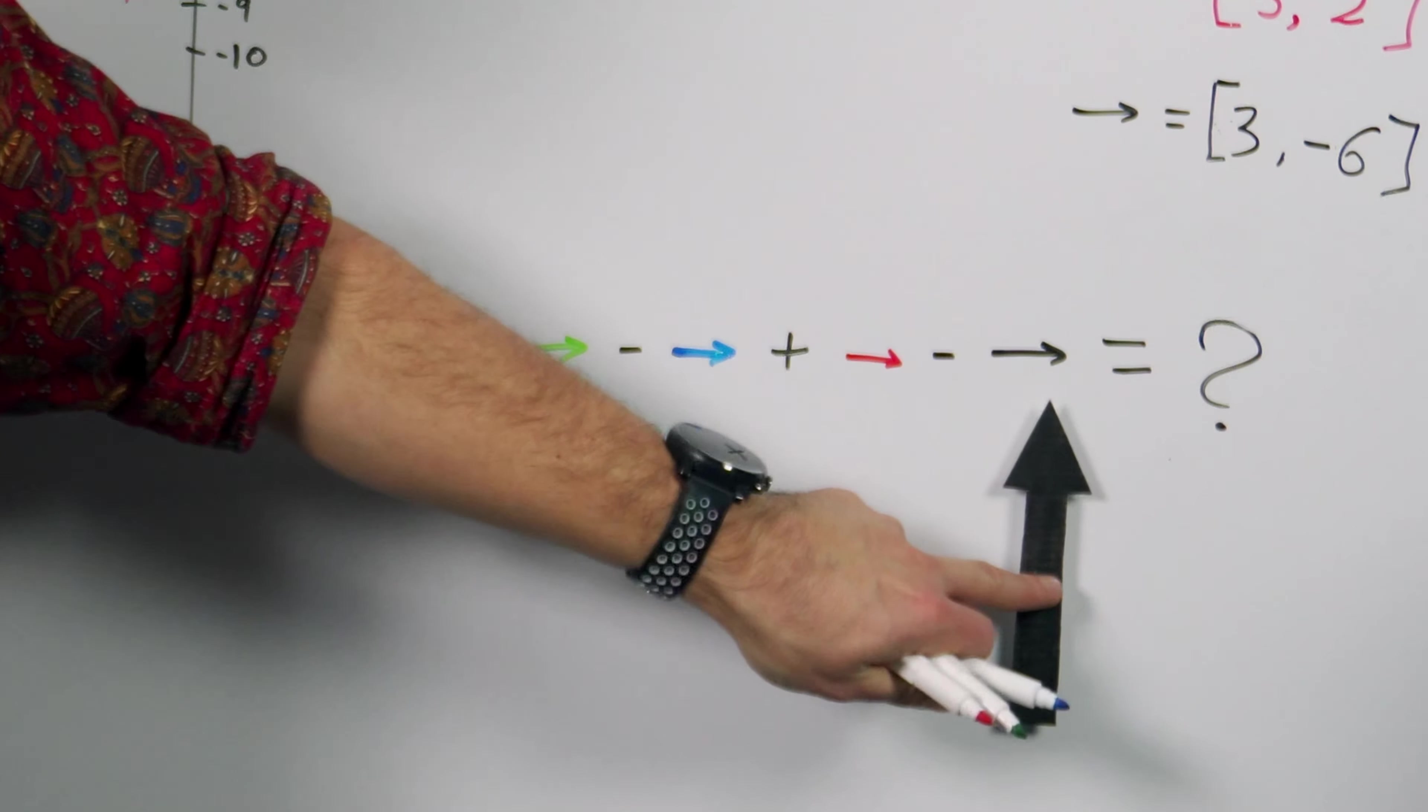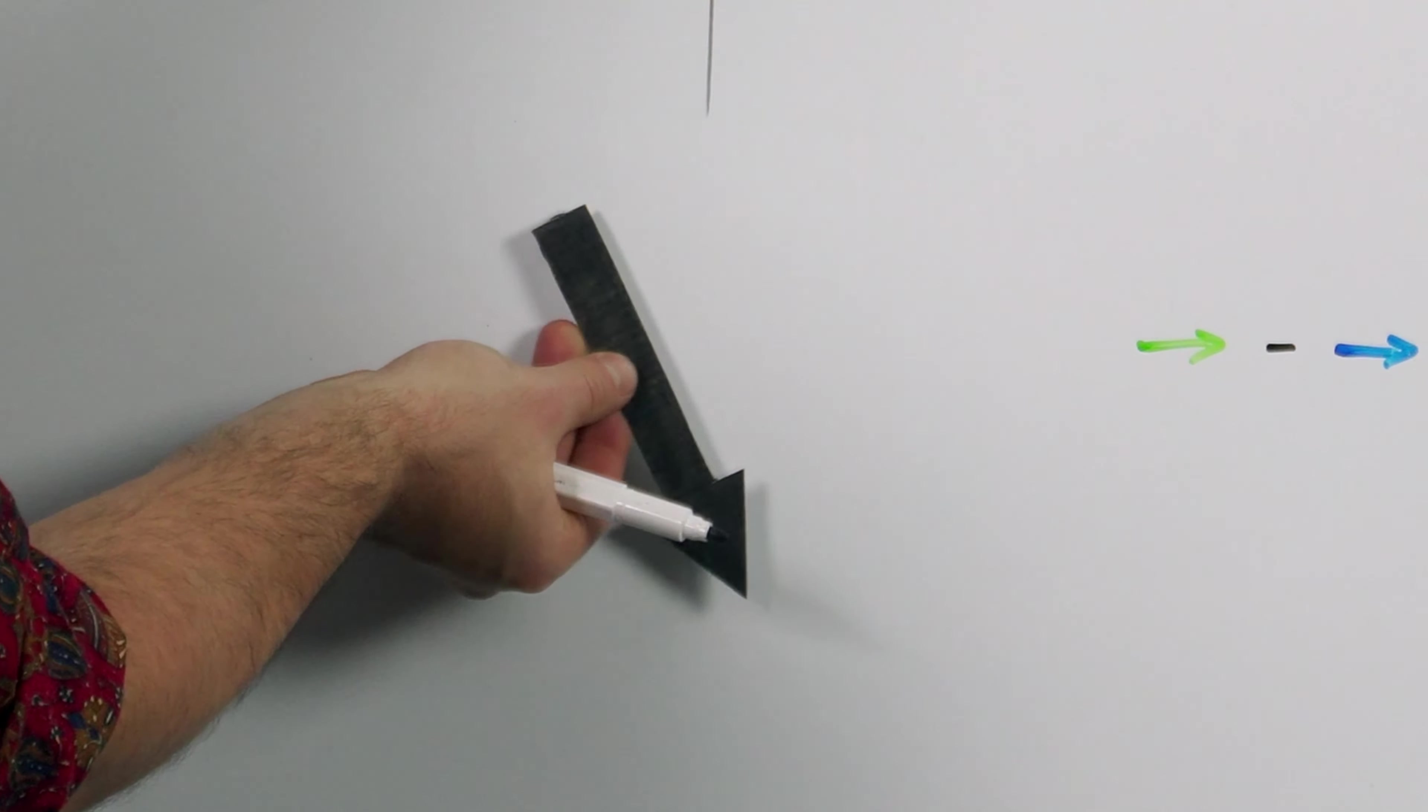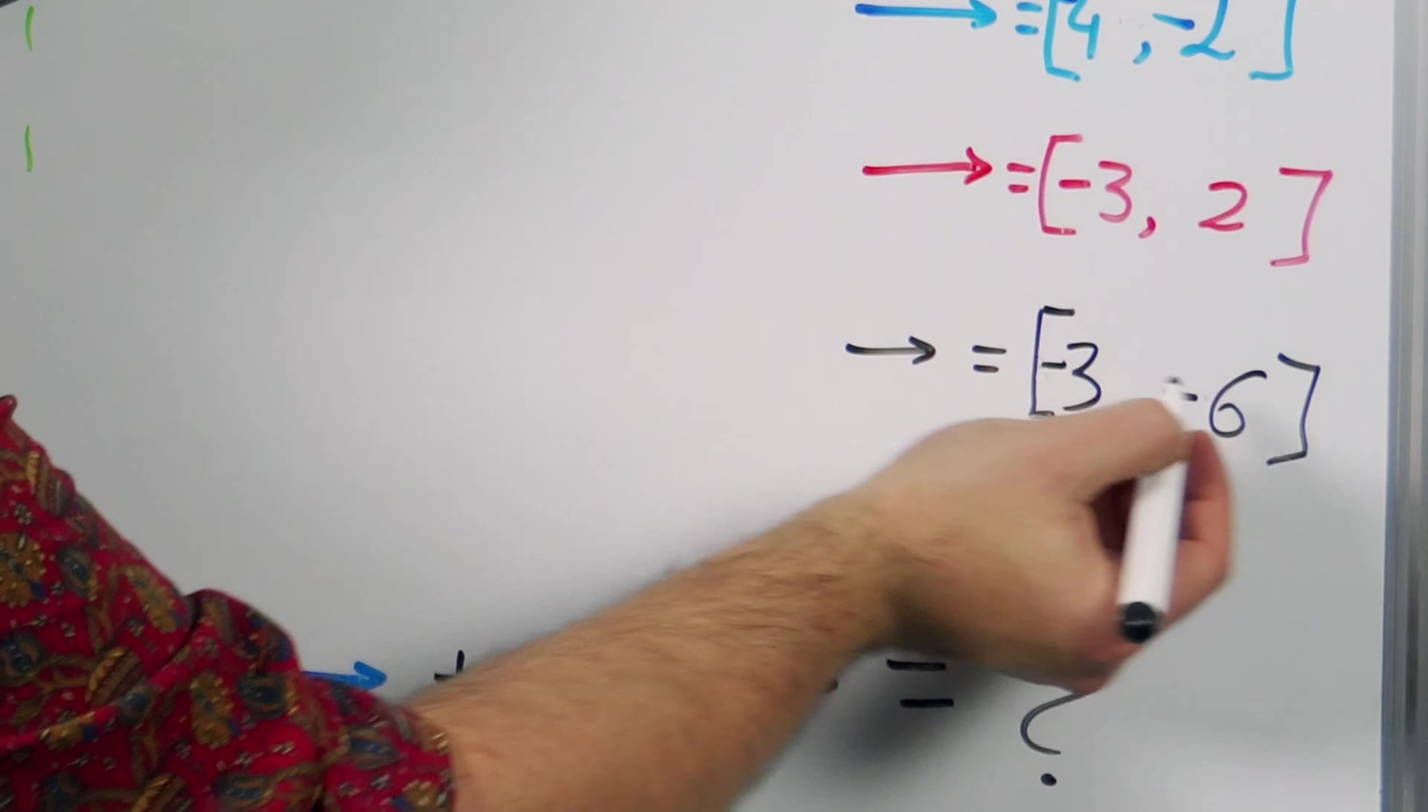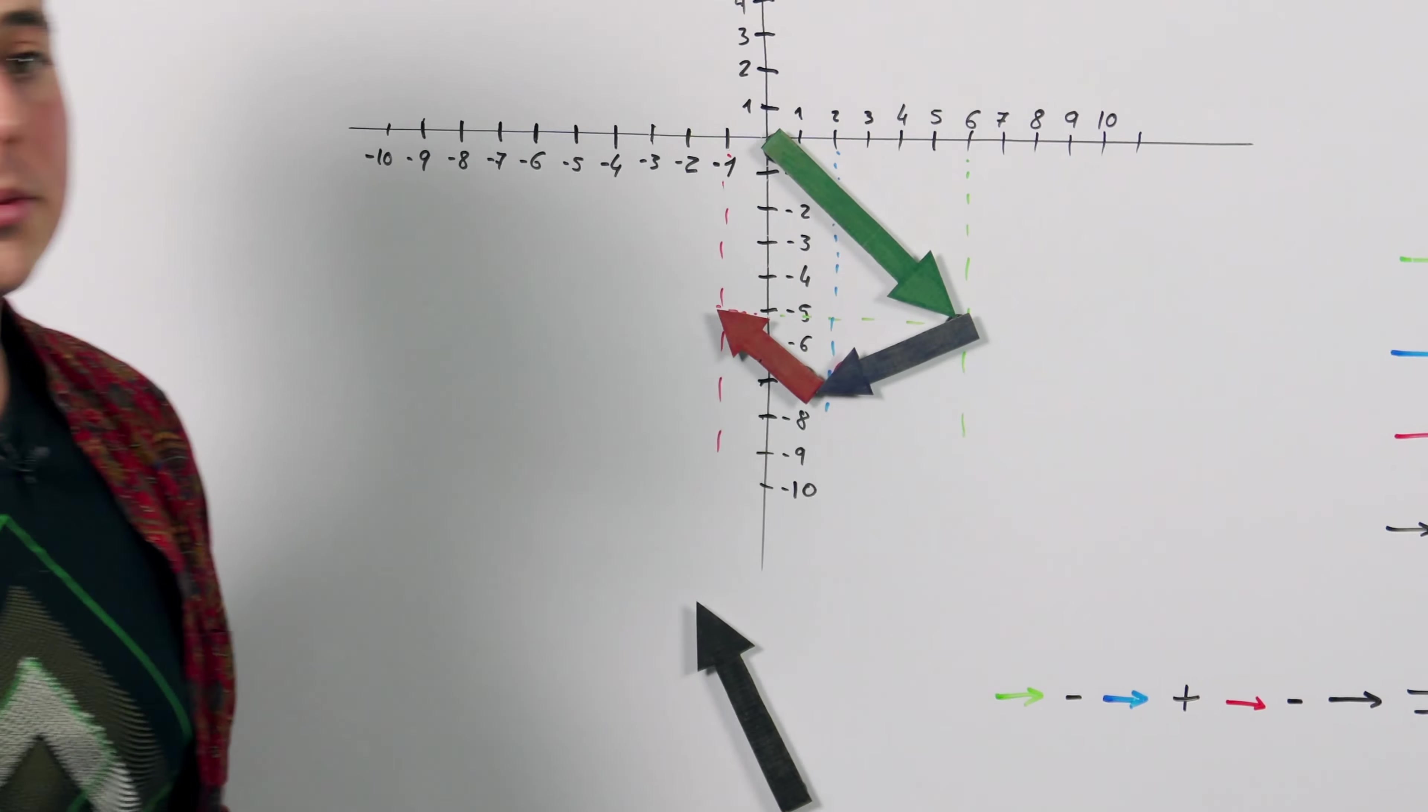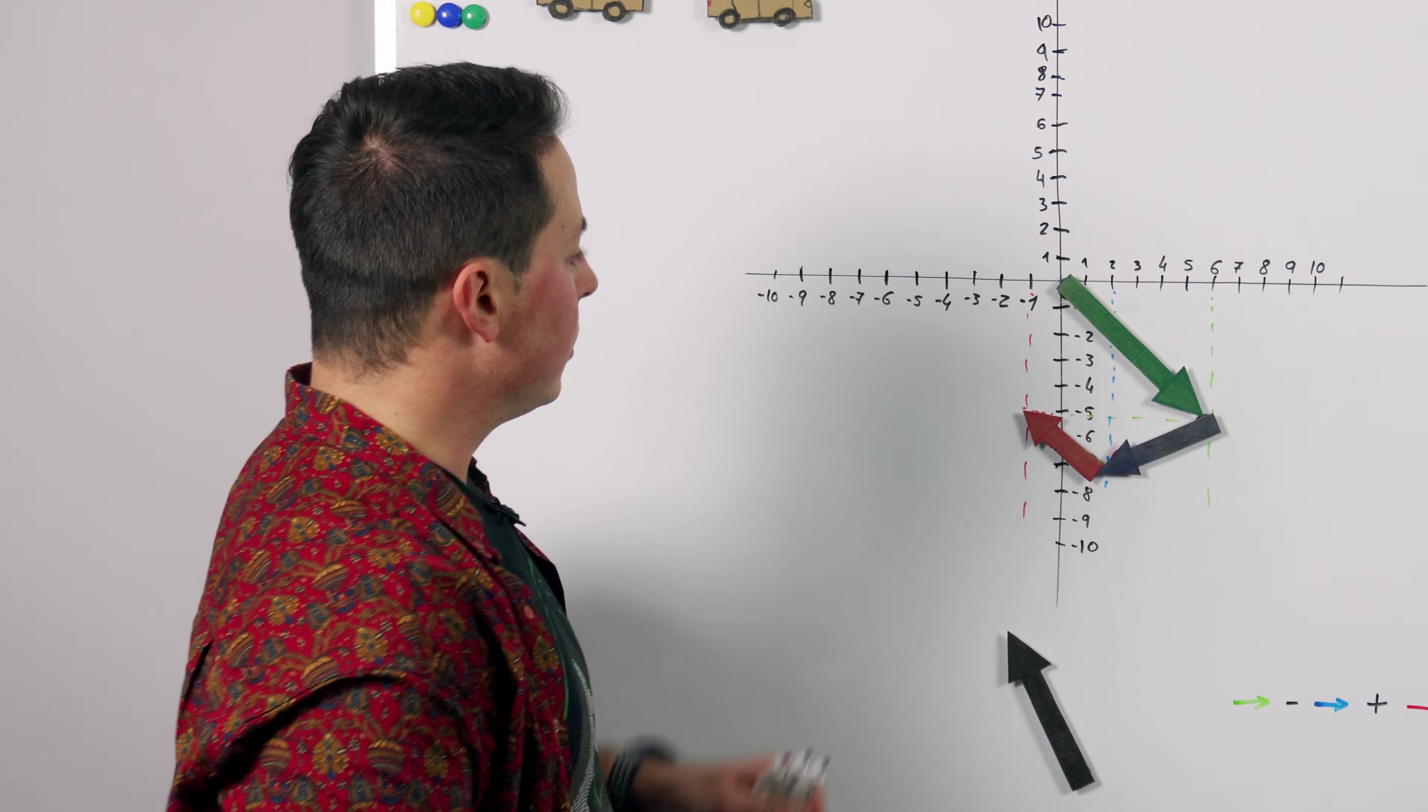Last but not least is the black one. 3 minus 6 something like this but it has a minus in front of it so we need to flip it around. To do that we add a minus minus so we get minus 3 minus minus 6 which is plus 6 and we add it to our components.